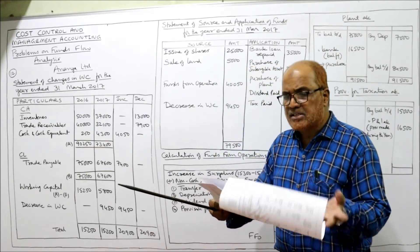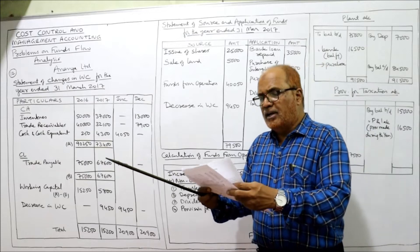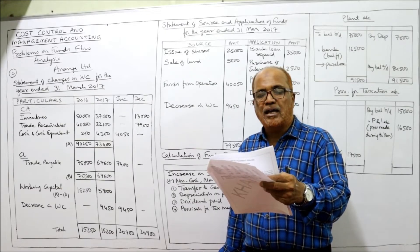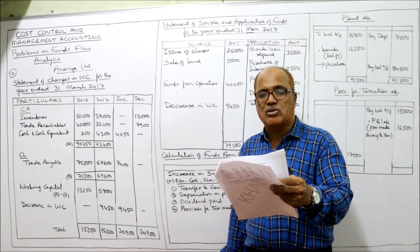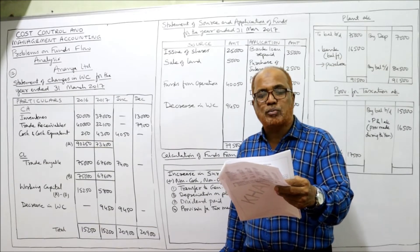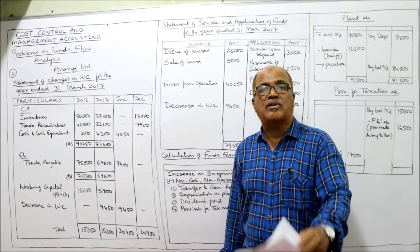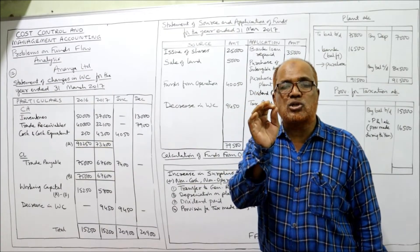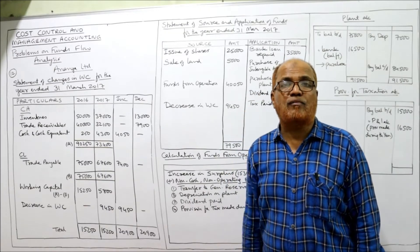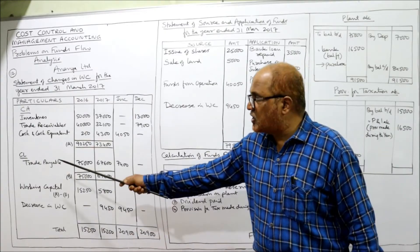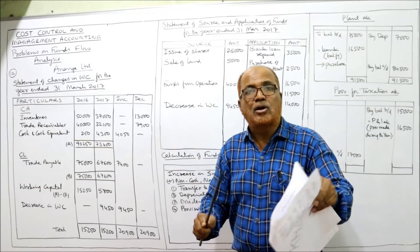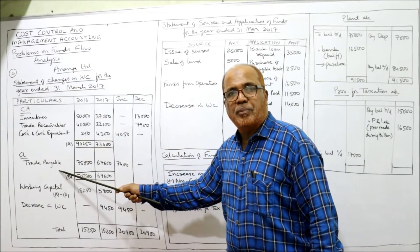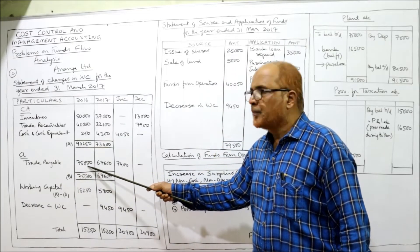But in this problem, see the last paragraph of adjustments: dividend paid during 2017 is 11,500; depreciation written off on plant is 7,000; and income tax provision made during the year is 16,500. It is specifically stated that proposed dividend and provision for tax should be treated as an appropriation of profit. So don't take provision for taxation as a current liability.